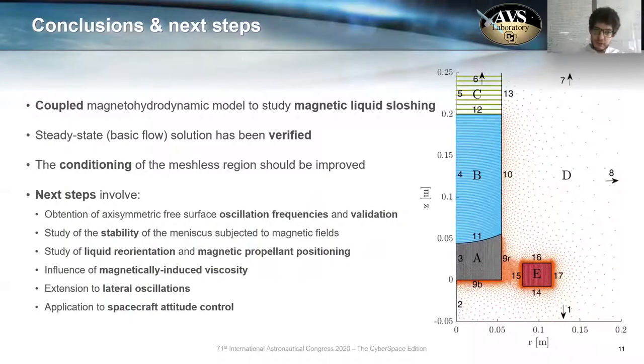So to conclude this presentation, we have developed a coupled magnetohydrodynamic model to study magnetic liquid sloshing. This has never been done before. It is an extremely complex problem. We have also verified the steady-state solution that is the shape of the meniscus and the magnetic side of the model. But the conditioning of the region D is still not good enough to test strong magnetic fields, and we are working on solving this problem.